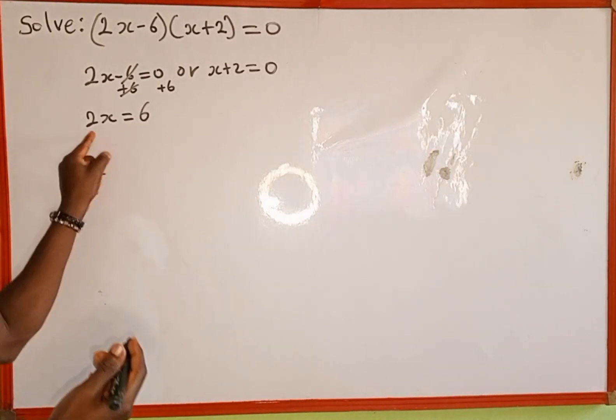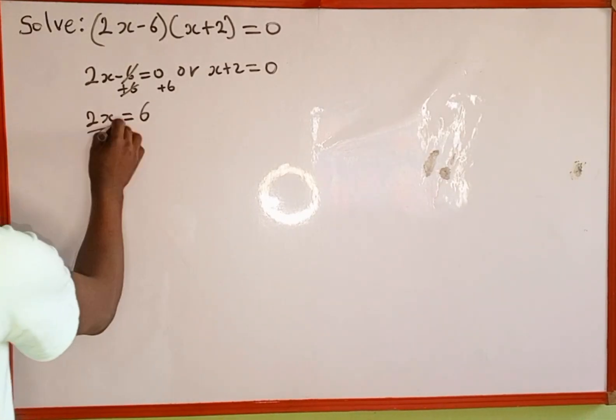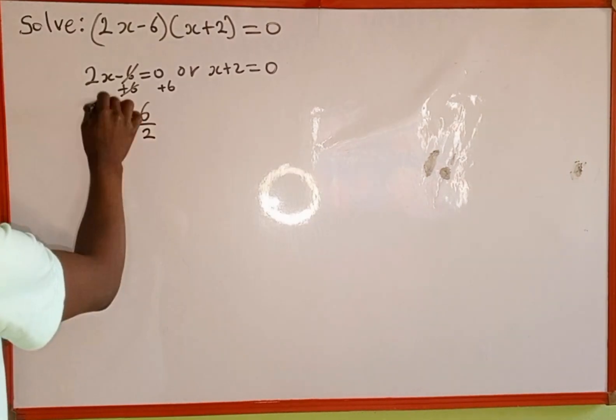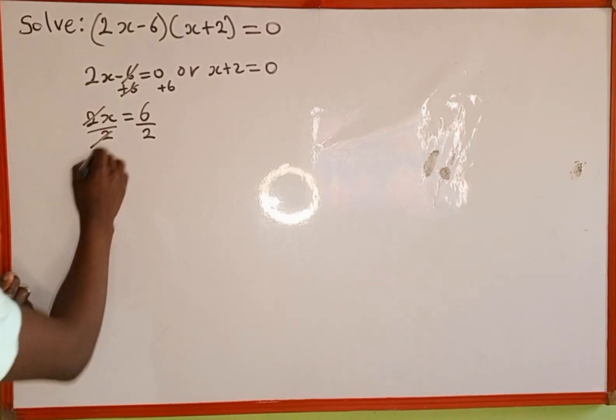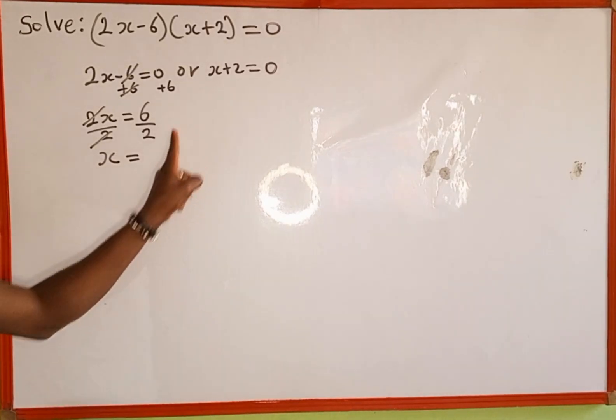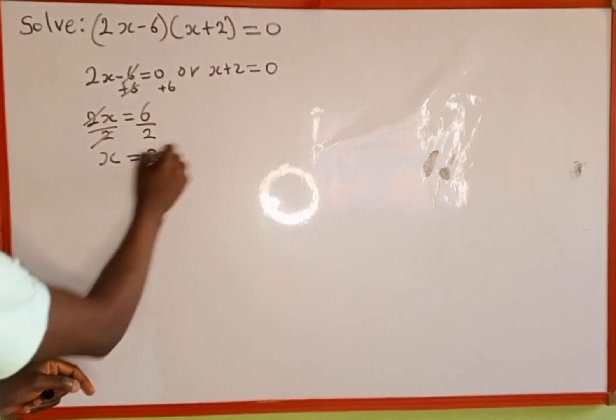Now we divide through by the coefficient of x, which is 2. We have 2 here, also 2 here. This 2 is going to cancel this 2. We are left with x, which is equal to 6 divided by 2, which is 3.